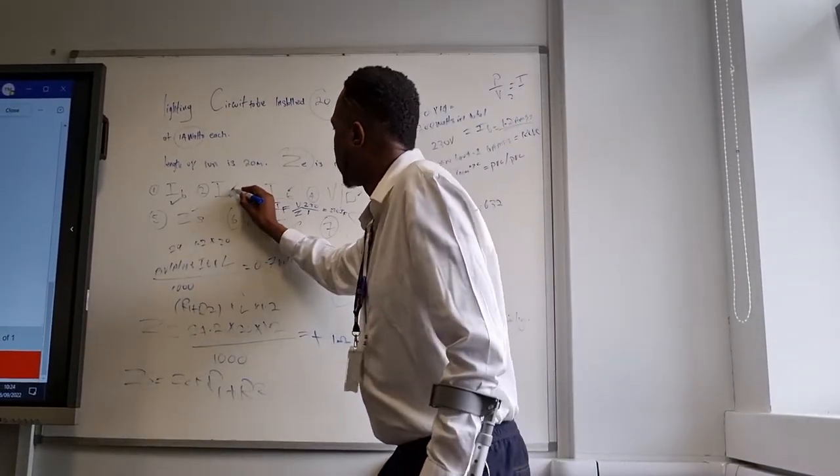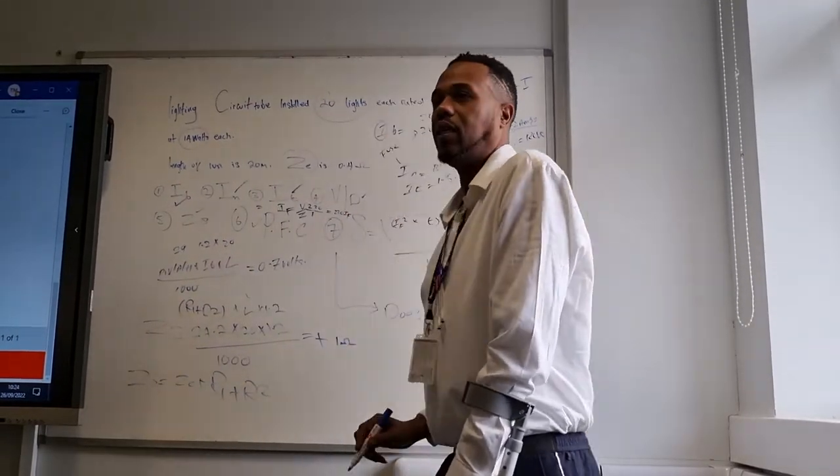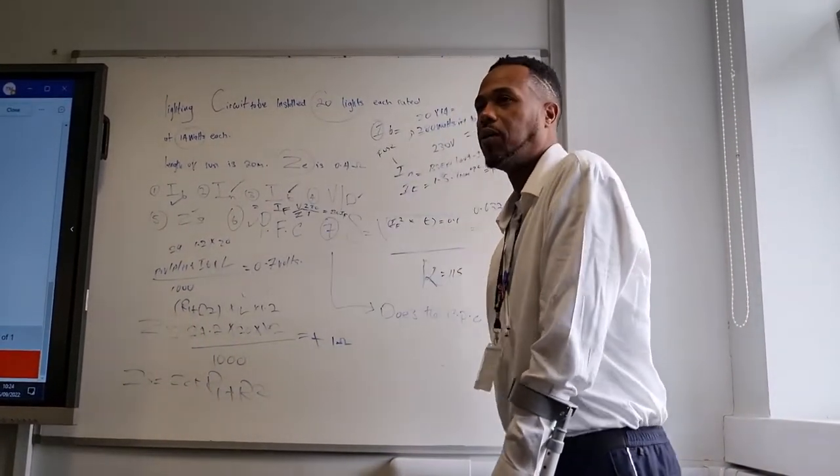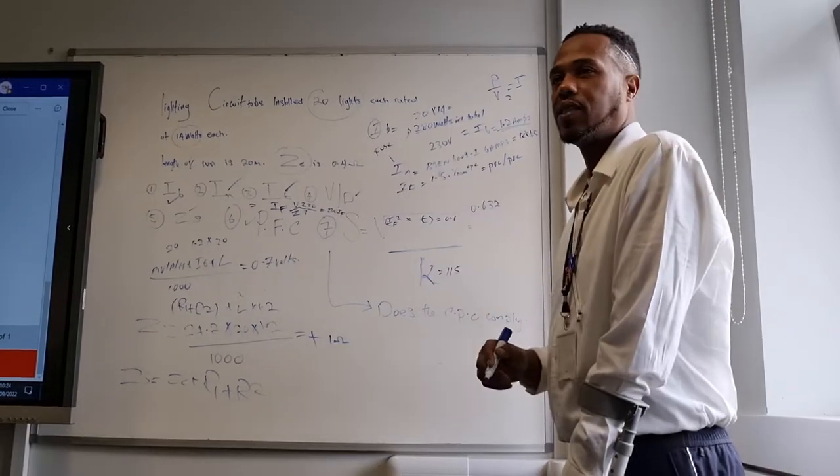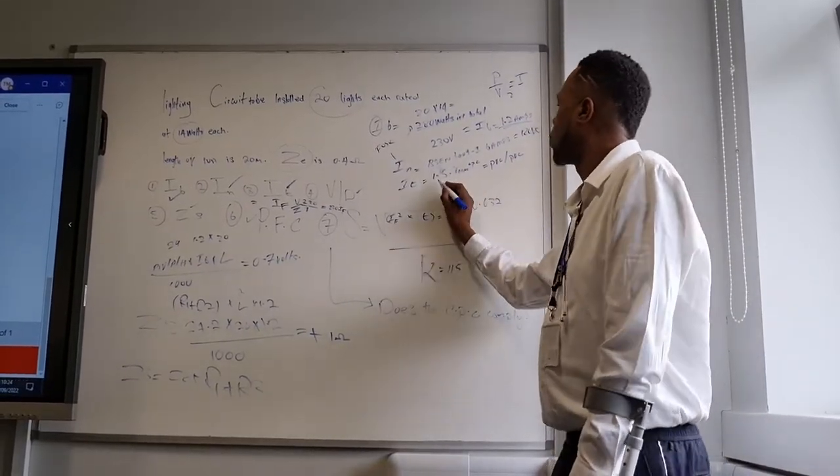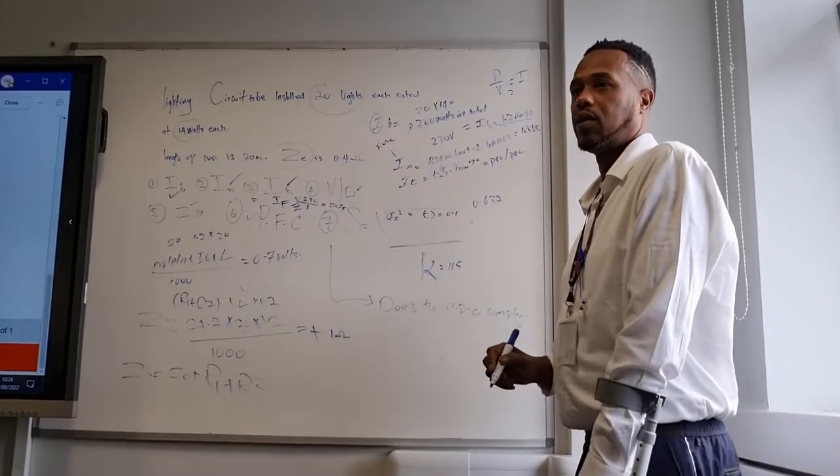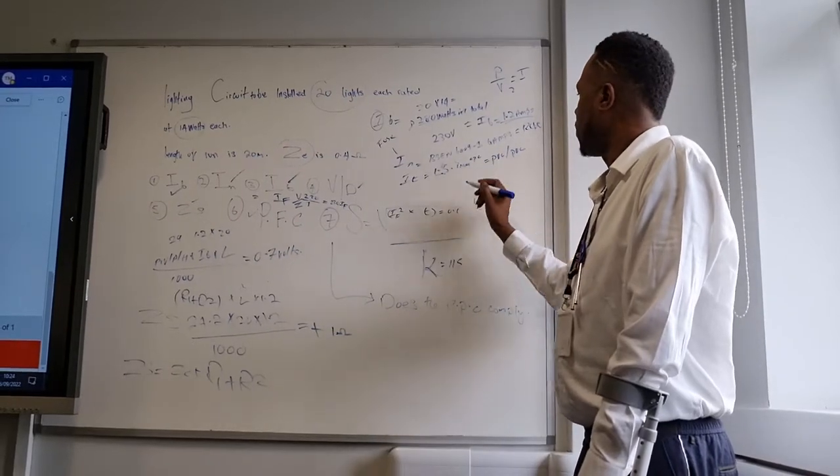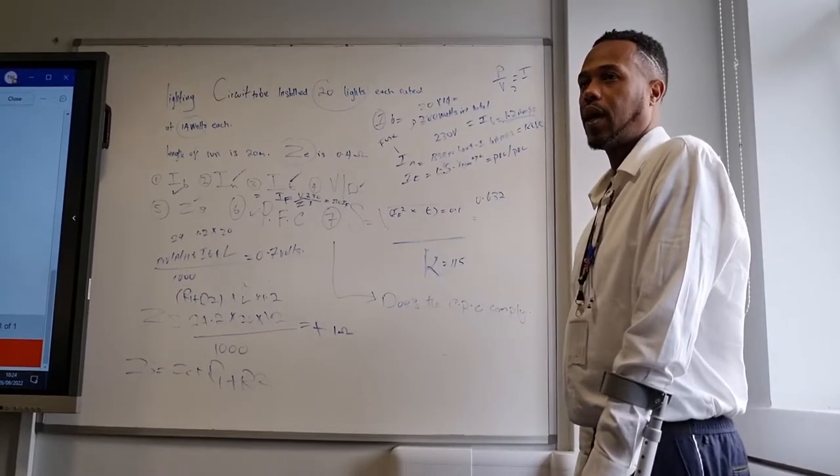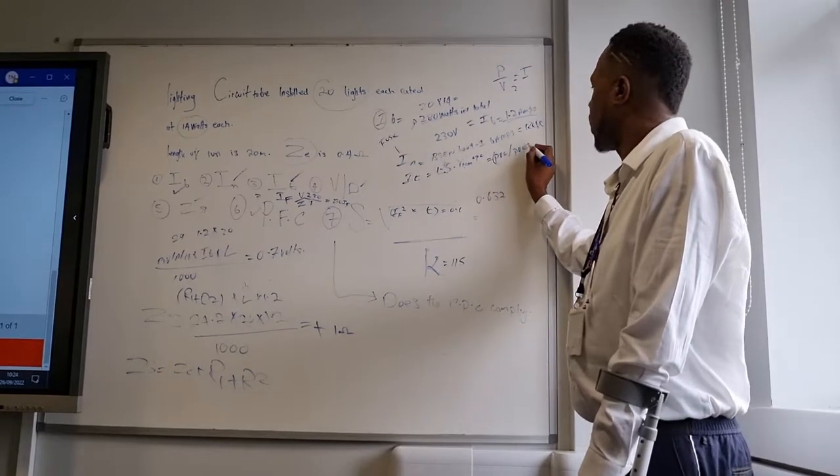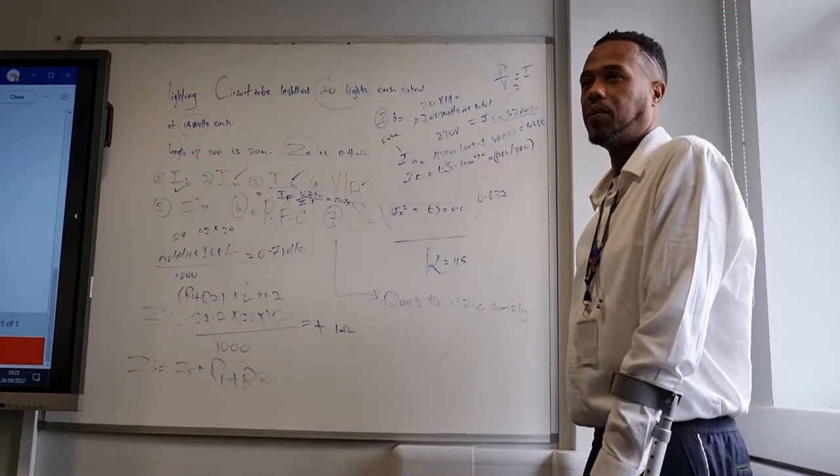So we've then taken care of the IN, the IB. We've got the IT, which is the tabulated value, the cable size. For a lighting circuit, you use 1.5. The CPC will be 1 mil. PVC, PVC. That's the cable.